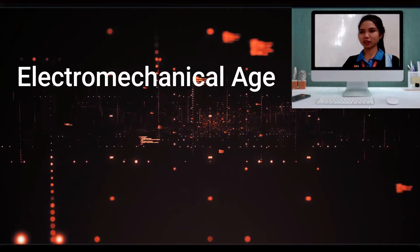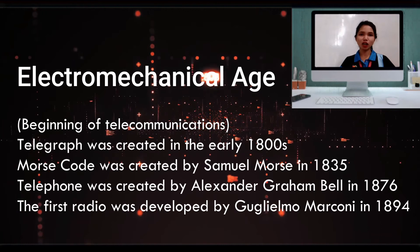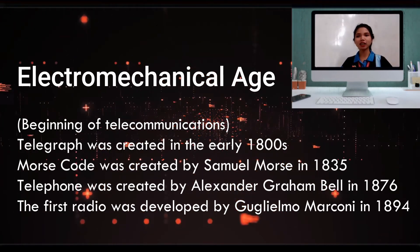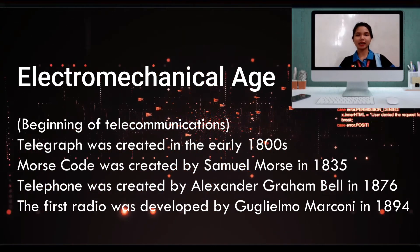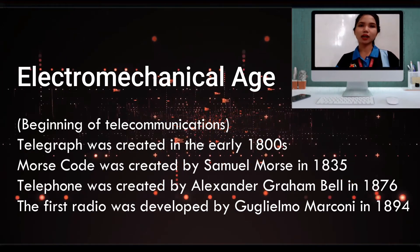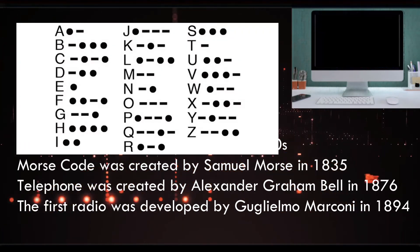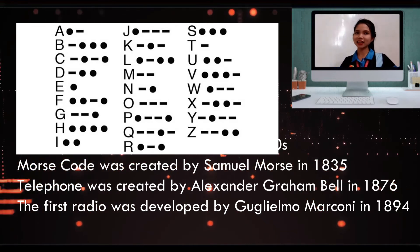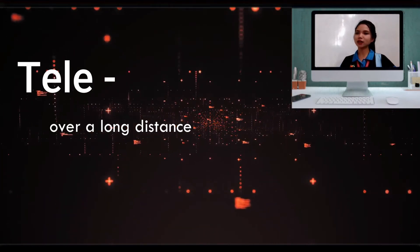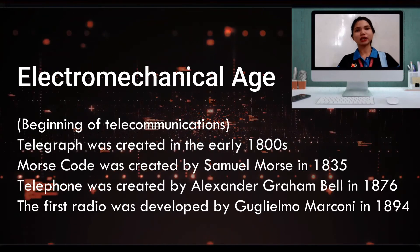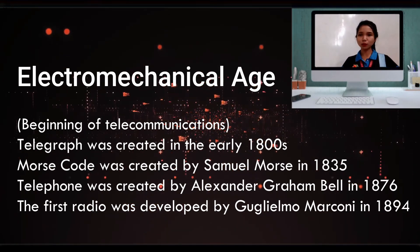The third age of information technology is the electromechanical age, from early 1840s to 1940s. It marks the beginning of telecommunications — 'tele' meaning over a long distance. The telegraph was created in the early 1880s. Morse code was created by Samuel Morse in 1835 and is presented through dots and dashes. The telephone was created by Alexander Graham Bell in 1876.